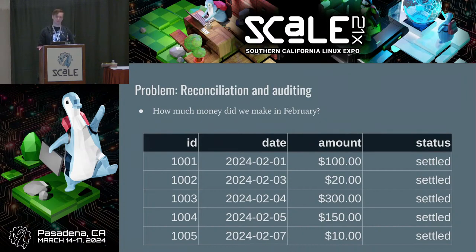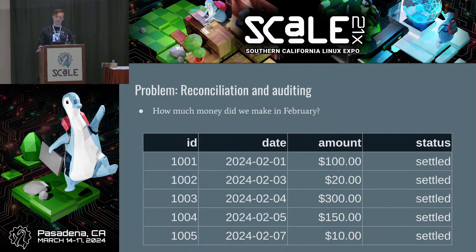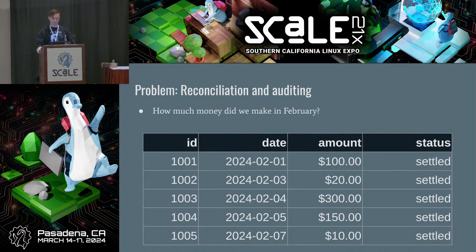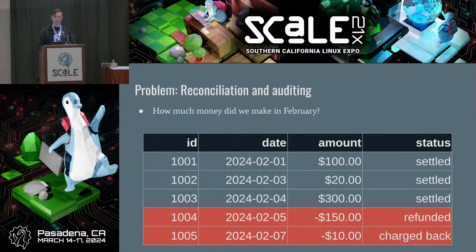One example of this would be reconciliation and auditing. In my early e-commerce days I would just think: that's an accounting problem, I don't need to worry about it. But if you're servicing many merchants, you have to answer this type of question. A naive implementation would be to have a payment entity in your system and as it goes through different states you update it — status equals settled, refund, chargeback. The problem is a naive query for February settled transactions would miss refunds and chargebacks that may have been settled in one month and reversed in another.